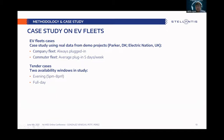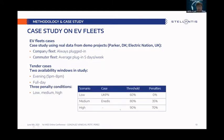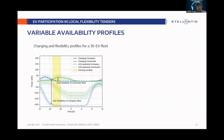Regarding the tender conditions: we studied two availability windows — one where the DSO requires flexibility only during the evening period between 5 to 8 PM, and a second where flexibility is required at any time of day. We also studied three penalty conditions: a low penalty scenario corresponding to the UKPN case, a medium one corresponding to the Enedis case, and a high one that we built to analyze the impact of even stronger penalties.